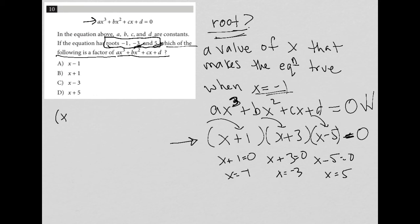Our factors are X plus 1 because negative 1 is a root, X plus 3 because negative 3 is a root, and X minus 5 because positive 5 is a root.